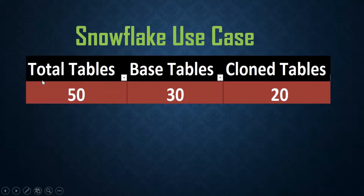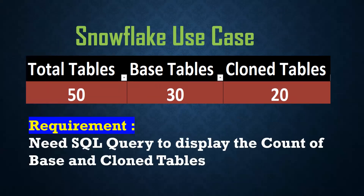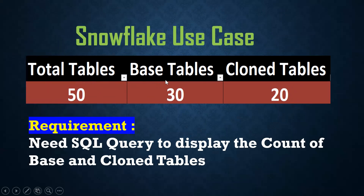I have one database, and in this database there are a total of 50 tables. Out of these 50 tables, I want to figure out which are base tables and which are clone tables. By using a SQL query, we want to determine — suppose 50 tables are there, out of which 30 tables are base tables and 20 tables are clone tables.